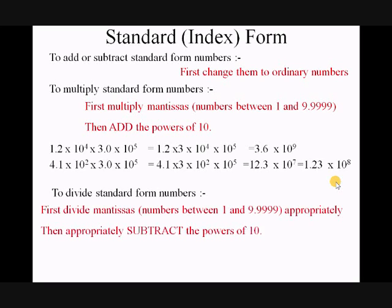Dividing standard form numbers is a similar arrangement. You divide the mantissa, that's the number between 1 and 10, and then subtract the powers of 10. Here's an example. 3.6 times 10 to the 9 divided by 1.2 times 10 to the minus 2. So I get my answer 3.0 times 10 to the 11.